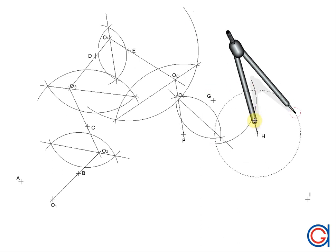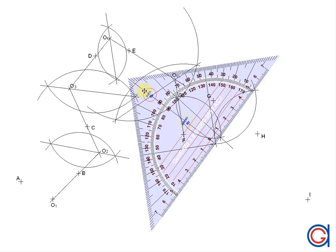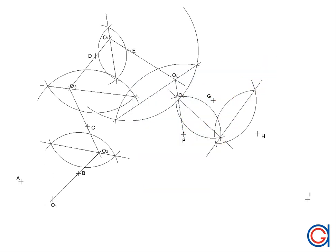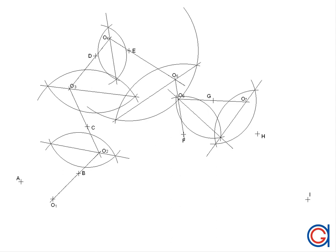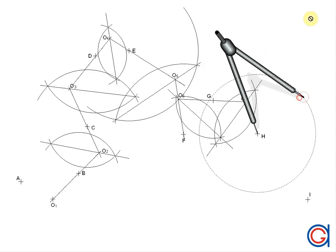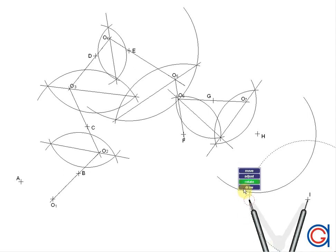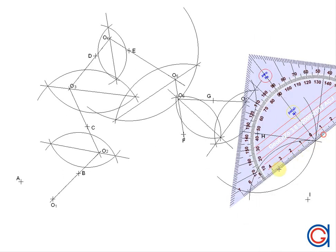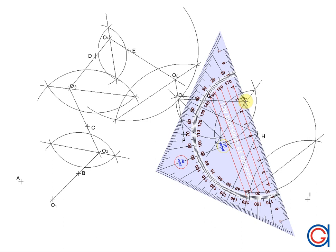We continue again, working out the perpendicular bisector of G and H, then joining O6 through G and elongating it until it cuts the perpendicular bisector, giving us O7. Finally we obtain our last center O8 by working out the perpendicular bisector of H and I, as can be seen here.